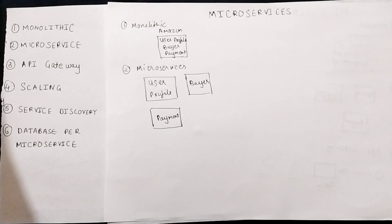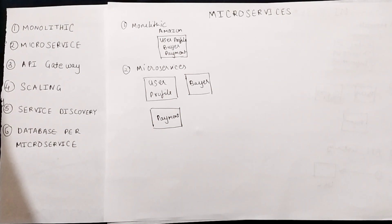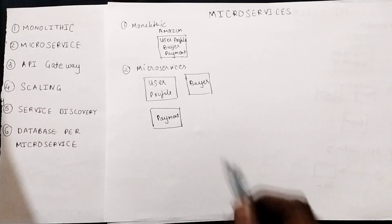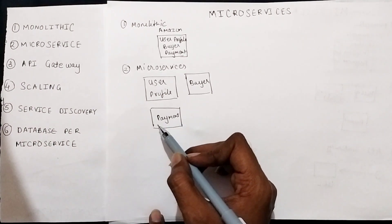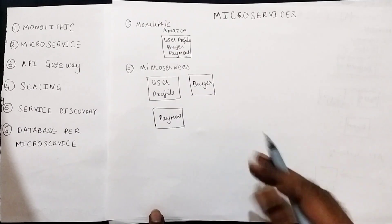Now you can see that if there is any change to the functionality of payment, you can independently build and deploy only the payment-related functionality. You don't have to touch user profile or buyer-related microservices. Similarly, if you encounter any bug in the payment microservice, you can make the changes, build, and deploy the payment microservice independently.